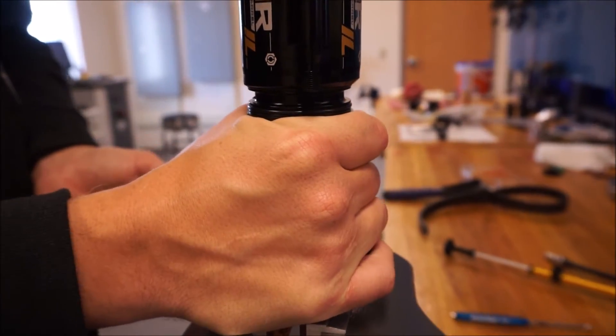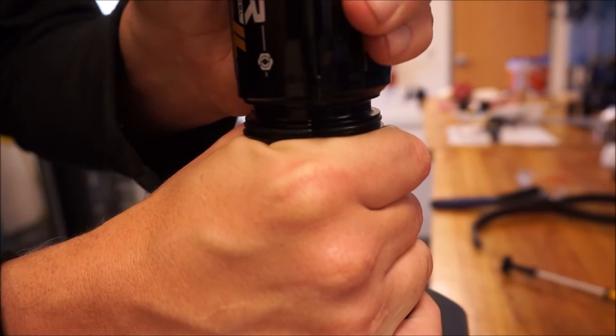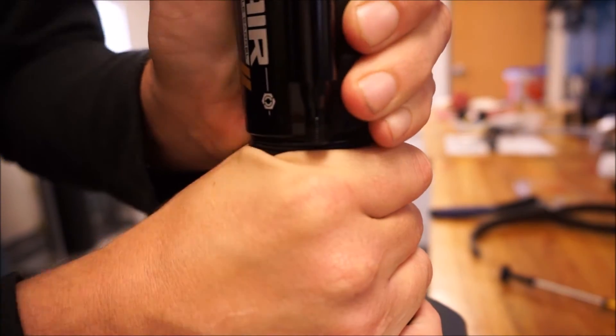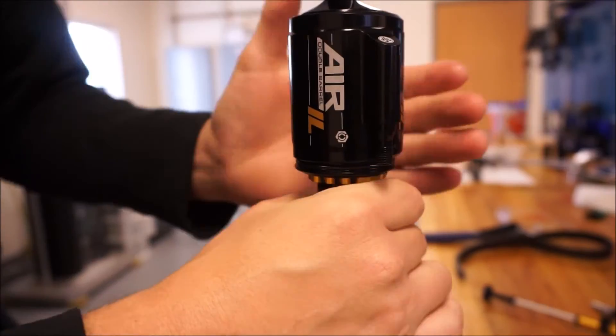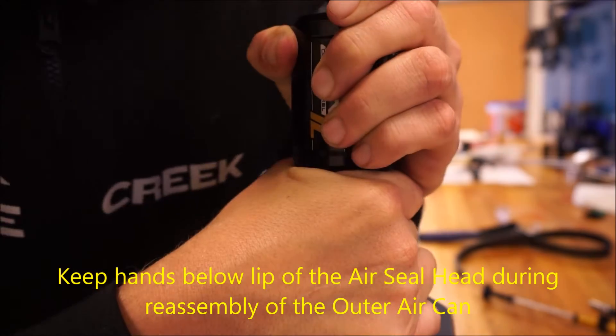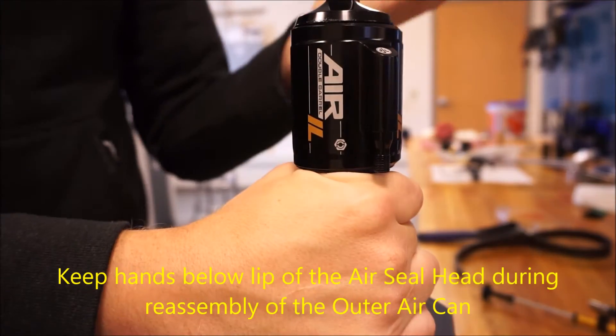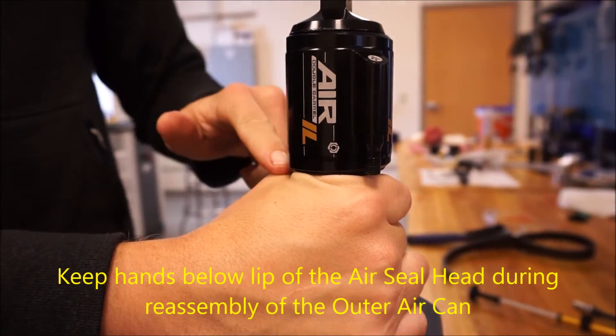While supporting the air seal head, you want to work over the first O-ring and then keeping your hands clear, it should click into the second O-ring.